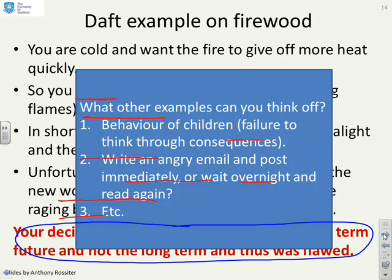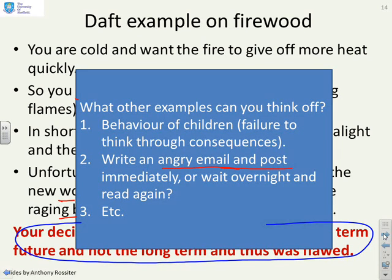You can think of lots of other examples if you want. The behavior of children who often fail to think through the consequences before they act. And that's a bit like using a short prediction horizon. It's not thinking through the long term consequences. It's just thinking through what's going to happen immediately. Or some of you may have been victim to writing an angry email and posting it immediately instead of waiting overnight, reading it again and taking your time. Look through the long term, not just the short term.